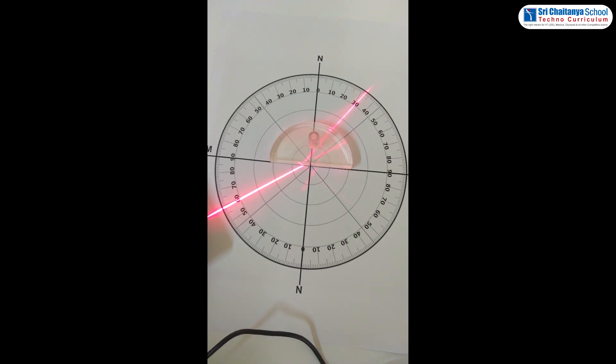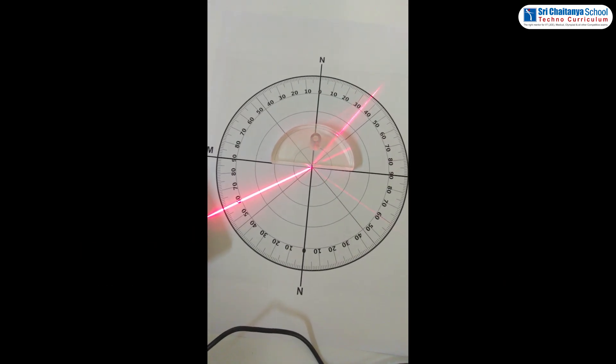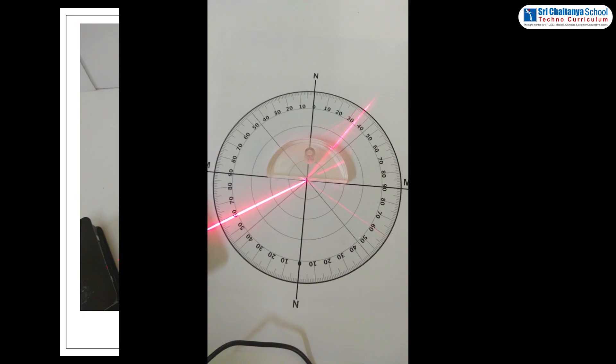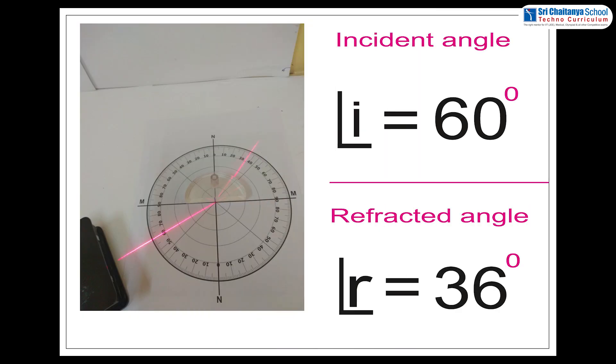Now, when the laser light is at 60 degrees, the angle of refraction is 36 degrees.